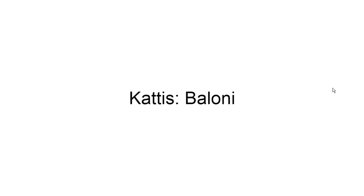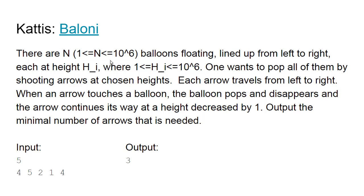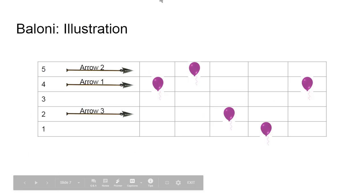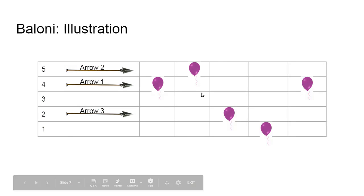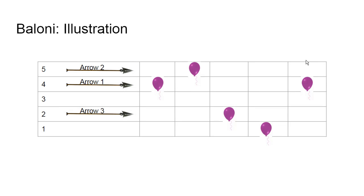Let's look at the first example problem for this topic. This is a problem on Codeforces called ballooning. There are n balloons floating, lined up from left to right, each at a particular height. The height is upper bounded by 10 to the 6. Here is an illustration of the sample test data — we have five balloons, each at a particular height.